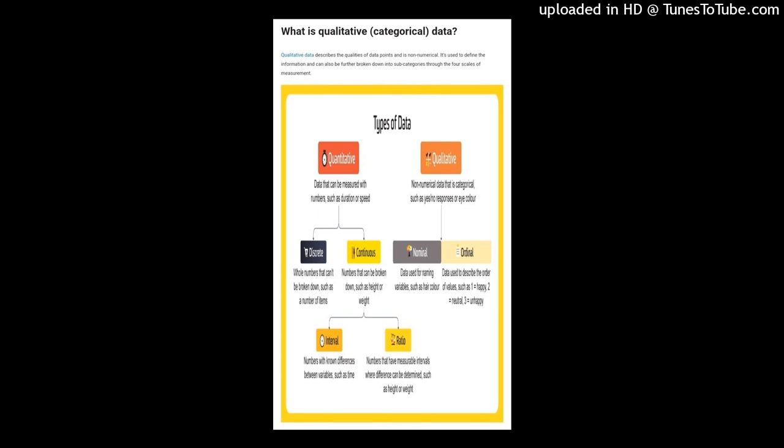The interval scale of measurement contains the properties of nominal and ordinal data, but the difference between data points can be quantified. This type of data shows both the order of the variables and the exact differences between variables. They can be added to or subtracted from each other, but not multiplied or divided — for example, 40 degrees is not 20 degrees multiplied by 2.